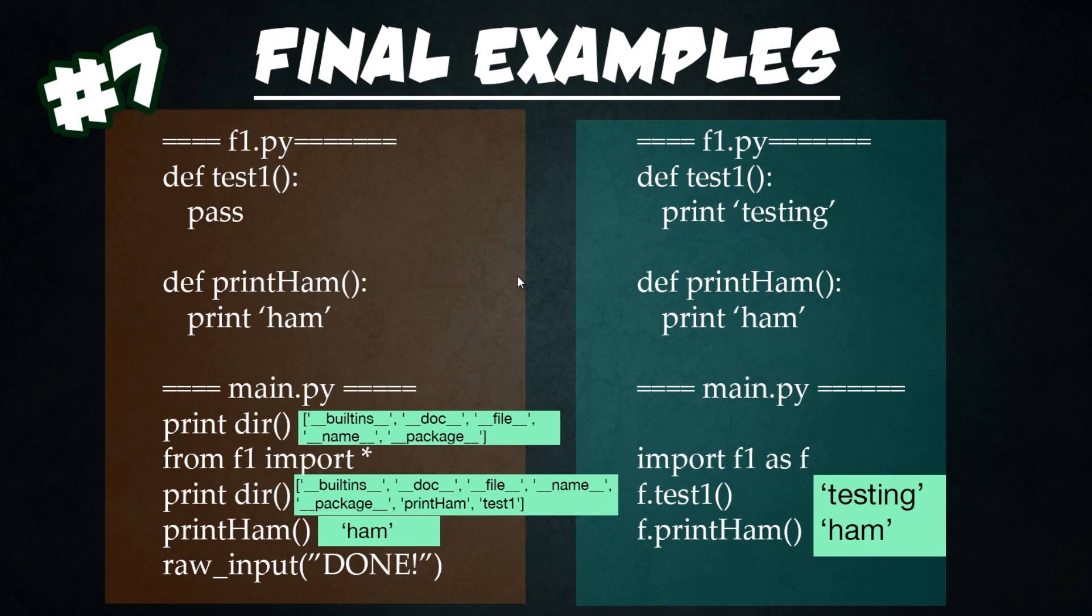Here we have the final examples from number seven. In our file one, we just have some simple functions created. In the second file, we're looking up the current objects available to this directory, to this current file that's running. We have built-ins, we have document file, we have name packages, et cetera. And then after we import it, we'll notice that our functions that we created up above will actually be imported here into this object list available to us. Since we typed from file one import star, this is going to import the functions as if they were already in this file. So we don't have to use any f dot whatever to access those functions.